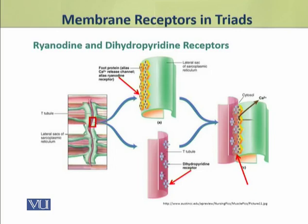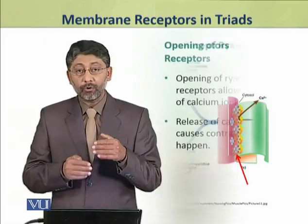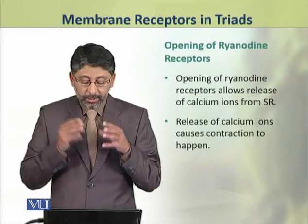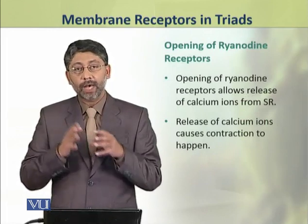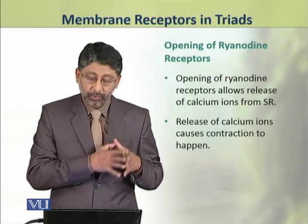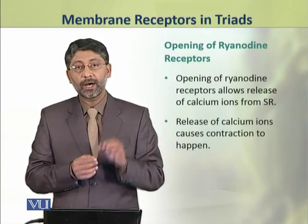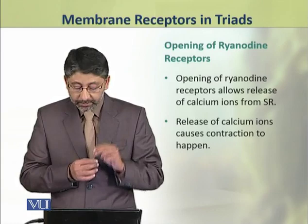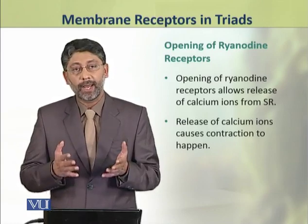Donon ki close proximity ki wajah se, jab dihydropyridine receptors activate hote hain, toh yeh mechanically stimulate karte hain ryanodine receptors ko, jo ke activate hote hain aur is ke natije mein yeh open hote hain. Aur in ki opening ki wajah se sarcoplasmic reticulum se calcium ions release hona shuru hote hain. The release of calcium ions causes the contraction to happen.